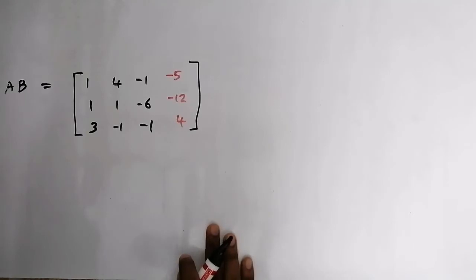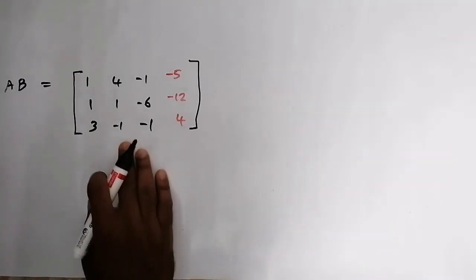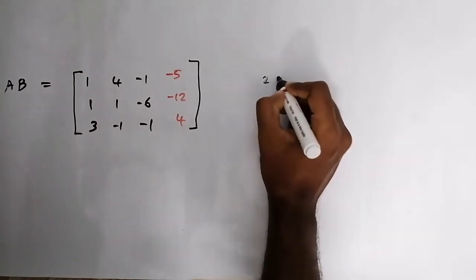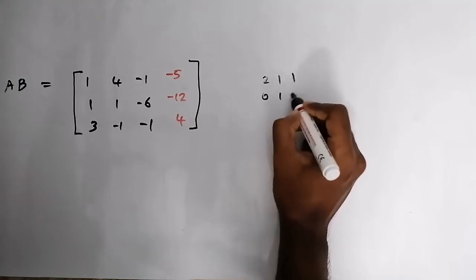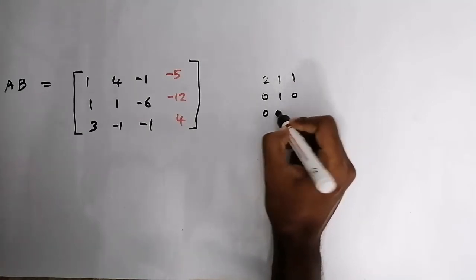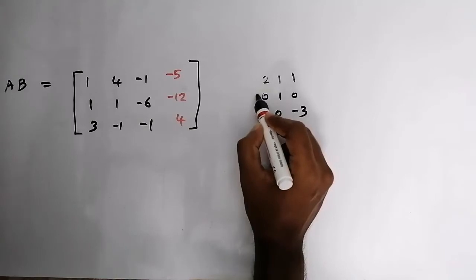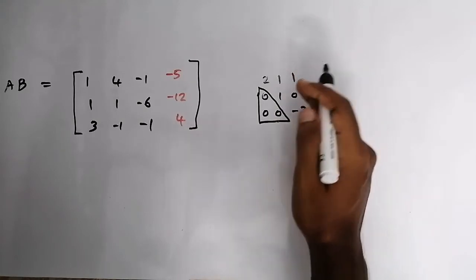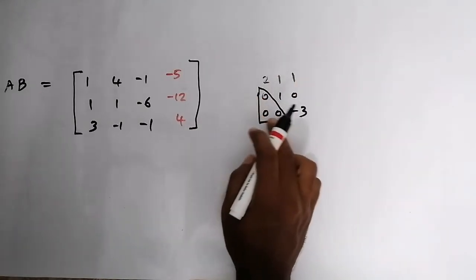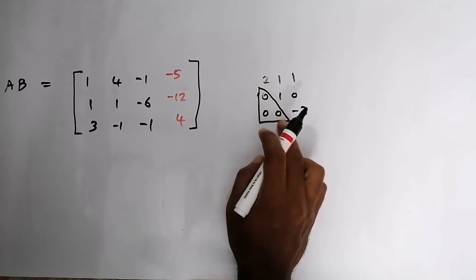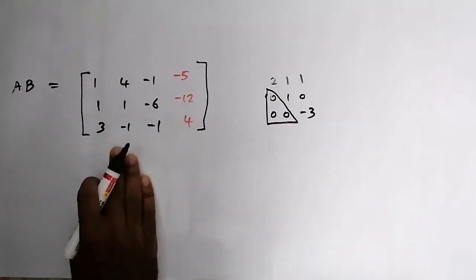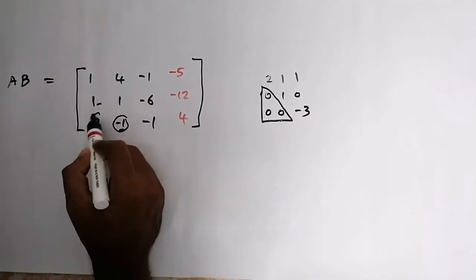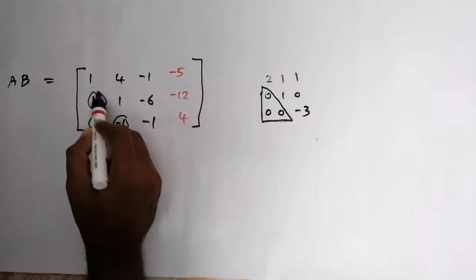Now with the Gauss elimination method, we need to convert this augmented matrix into an upper triangular matrix. In an upper triangular matrix, the lower portion elements are zero — only the upper portion has non-zero values. We need to make these three lower elements zero: the 1 in row 2, the 3 in row 3, and the minus 1 in row 3.